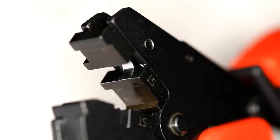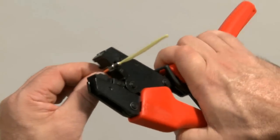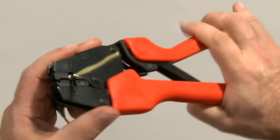Crimp the anchor by positioning it in the crimp tool so the end of the anchor aligns with the edge of the crimp die. Squeeze the handles of the crimp tool until you hear a click.